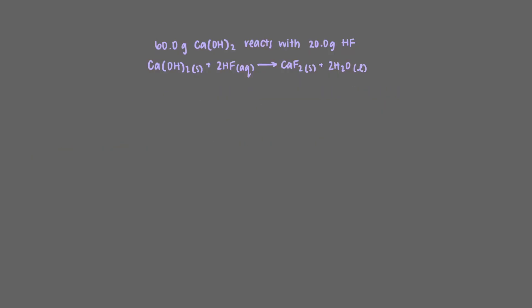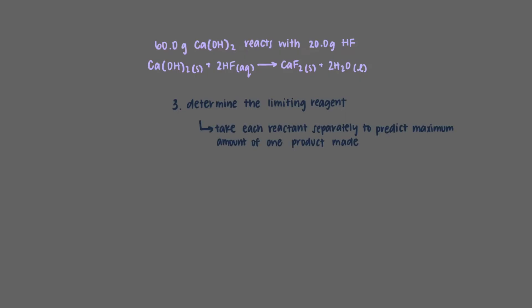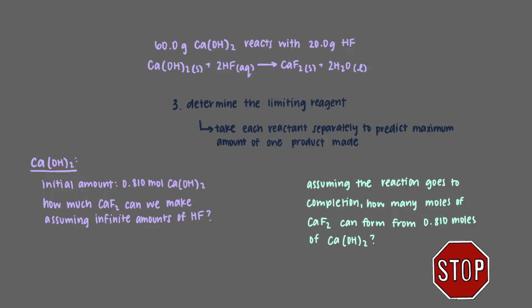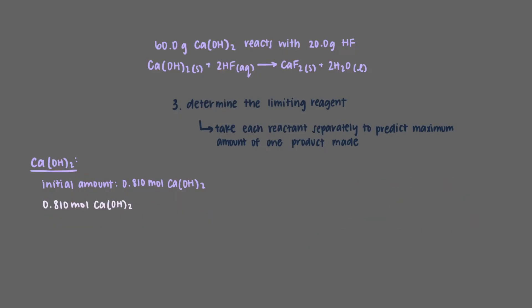We now need to figure out how much of these react. We start by determining the limiting reagent. This means we take each reactant separately and use it to predict the maximum amount of one product that is made. Let's start with calcium hydroxide and see how much calcium fluoride we can make, assuming infinite amounts of hydrogen fluoride. From the balanced equation, we need one mole of calcium hydroxide to form one mole of calcium fluoride, so 0.810 moles of calcium fluoride forms from 0.810 moles of calcium hydroxide.